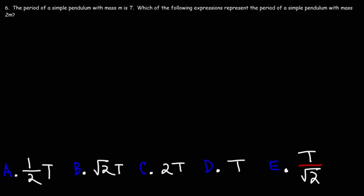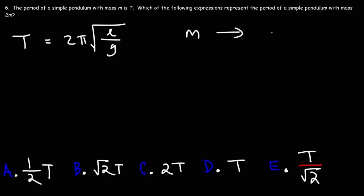Problem 6: The period of a simple pendulum with mass M is T. What is the period of a simple pendulum with mass 2M? Since the period formula does not include mass, changing the mass from M to 2M does not change the period. The period remains T. For a simple pendulum, the period is independent of the mass. The answer is D — no change.